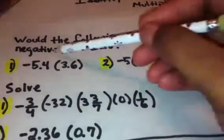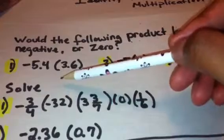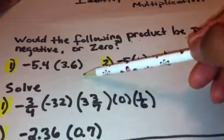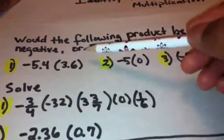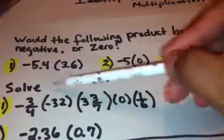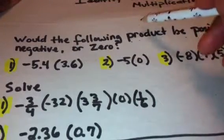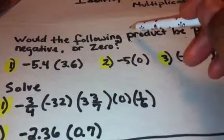With the first one over here, we see that we're dealing with negative 5.4 times a positive 3.8. And what is the rule for multiplication when you're dealing with two numbers with unlike or different signs in front of them? Well, the rule is that the answer is going to be negative. So number one here would, in fact, be negative.